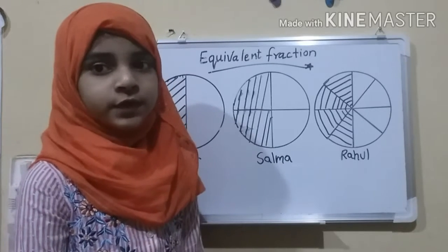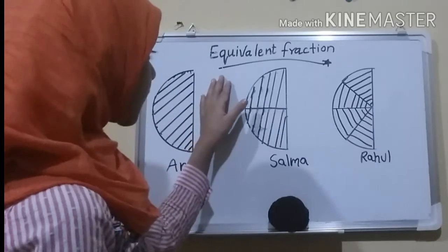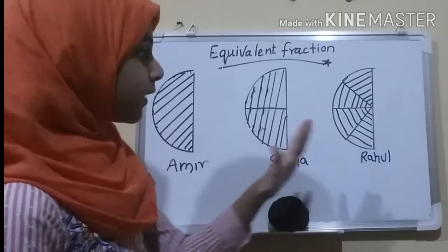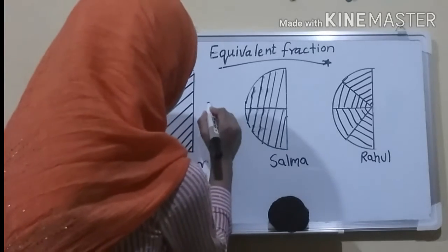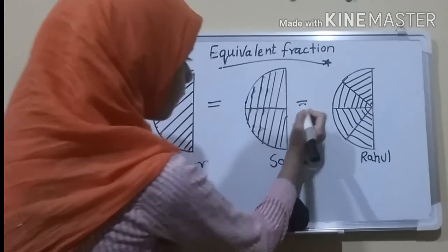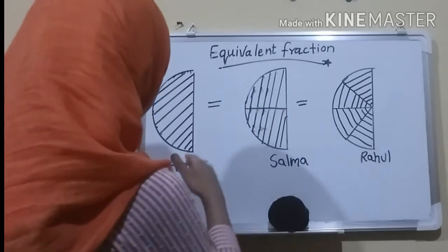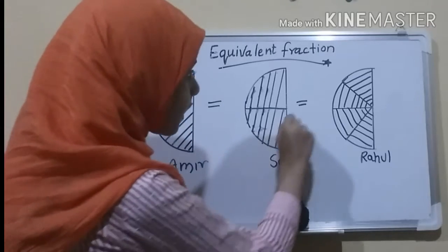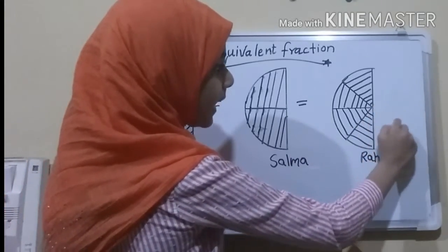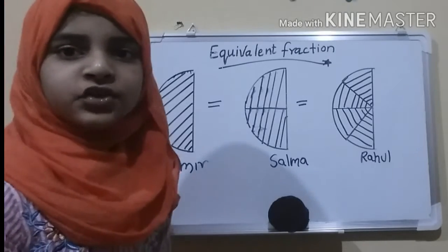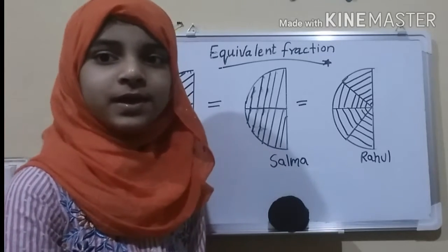Shall we find a solution to it? I have rubbed away the part they have not eaten — only the part they have eaten is left. We can observe that all of them are equal in amount. The only problem is that they are cut into different ways. Aamir has eaten half, Salma has eaten 2 by 4, and Rahul has eaten 4 by 8 of his pizza. Although the fraction is different, the amount is the same.